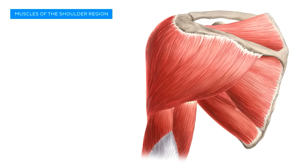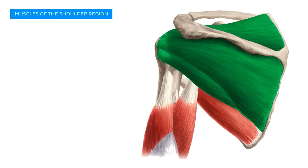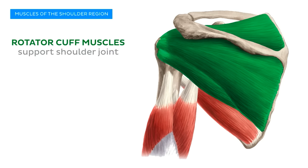If we remove the large deltoid muscle, we get a better view of the muscles lying deep to it. There are five muscles here to consider, four of which belong to the famous rotator cuff. The muscles of the rotator cuff share a common feature in that they all insert or have their distal attachment somewhere on the proximal end of the humerus, helping to support the shoulder joint by keeping the head of the humerus in its correct position within the glenoid cavity. From an anterior perspective, we have just one rotator cuff muscle to consider: the subscapularis muscle.